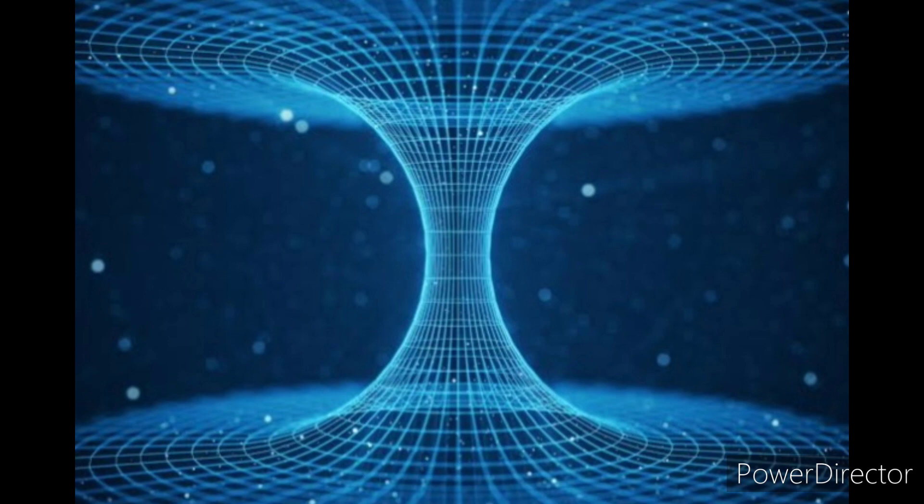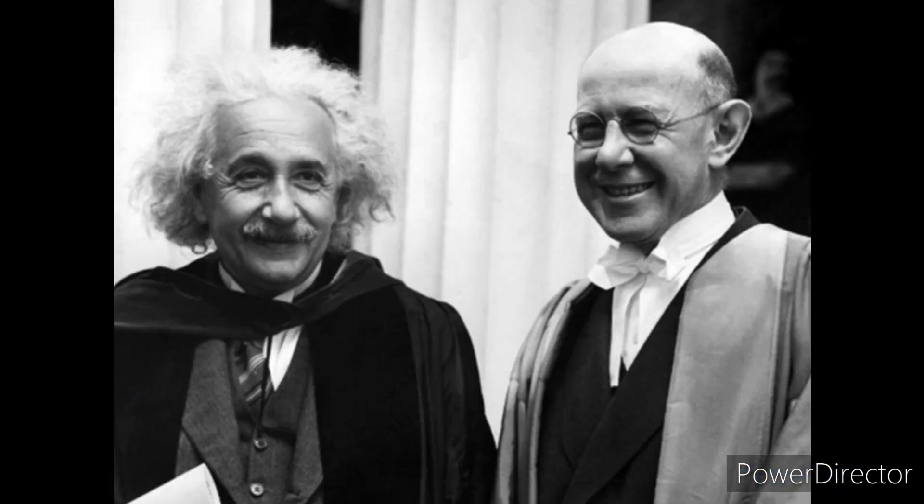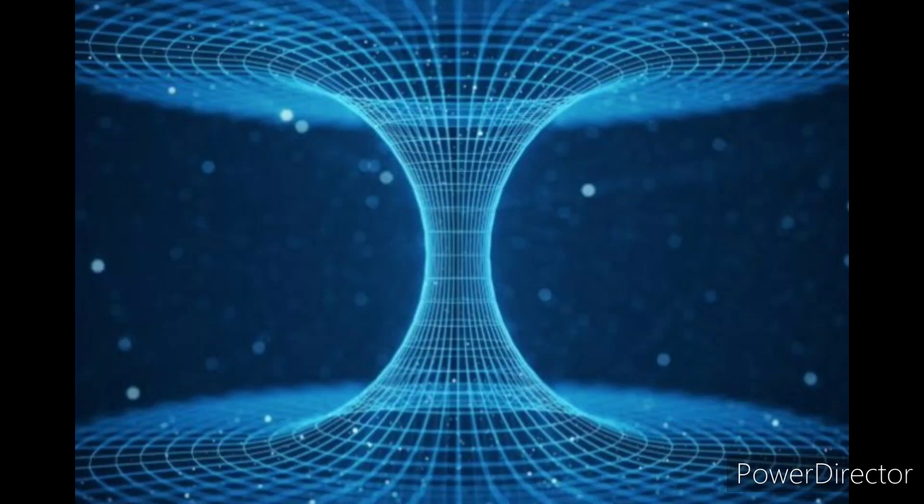General relativity was utilized by Albert Einstein and the American-Israeli physicist Nathan Rosen in 1935 to develop the concept and suggest the presence of bridges between space-time. These bridges link two distinct locations in space-time, hence posing the possibility of a shorter route that would shorten travel times in the distance. Since wormholes were mostly studied by Einstein and Rosen, they were also called Einstein-Rosen bridges.